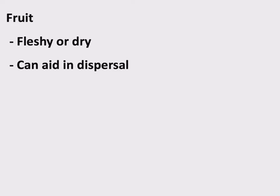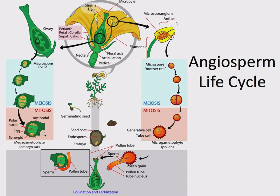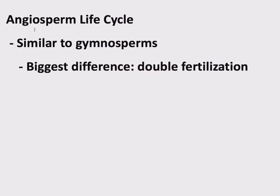Now let's talk about the angiosperm life cycle. It looks complicated, but it's everything we've already talked about — releasing pollen, pollen tube, delivering sperm down to the ovule, development. The details are things we've already discussed. The angiosperm life cycle is similar to gymnosperms in most ways, but there is one key difference that needs closer attention, specifically in the fertilization event.